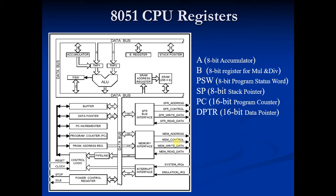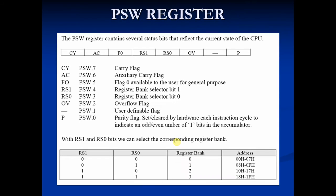Welcome to the 8th video of 8051 theory. Today I'm going to teach you a register called PSW. PSW stands for Program Status Word. As you can see, this is the PSW register. It is an 8-bit register, its address is D0h, and it is bit and byte accessible. It has four conditional flags, also called math flags, which set or reset according to the condition of the result, and three control flags.